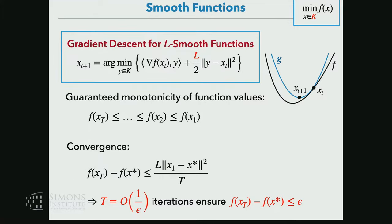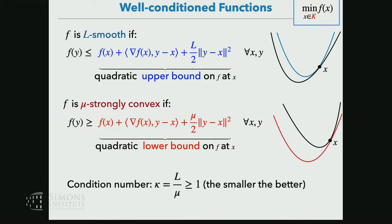There's a lower bound counterpart to the quadratic upper bound from smoothness, which is called strong convexity. We saw that convexity meant the affine approximation is a global lower bound. When the function is strongly convex, we actually get a quadratic lower bound: the affine approximation plus μ/2 times the distance squared. If we have both smoothness and strong convexity, this is called a well-conditioned function, with condition number κ = L/μ, which is at least one. The smaller κ is, the better conditioned the function.